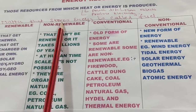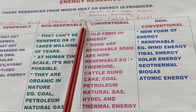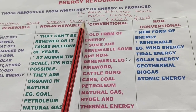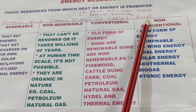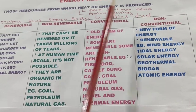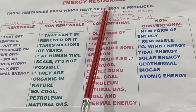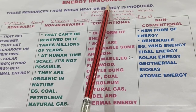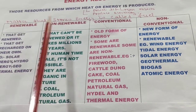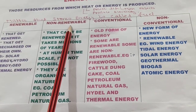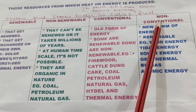Matter that stores energy is called fuel. Mainly, our energy resources are divided into two categories: one is renewable and non-renewable, and the second is conventional and non-conventional.